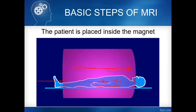Once the patient is removed from the MRI machine, the hydrogen protons return to random orientation and the north and south poles disappear. Remember, the patient only becomes magnetized when exposed to an external magnetic field.